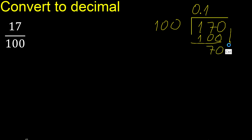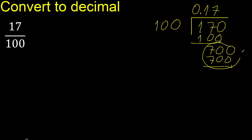There is no number that goes down, therefore complete with 0. Point is here. 100 multiplied by which number? Multiplied by 7 is 700. Subtract 0. Therefore finish.